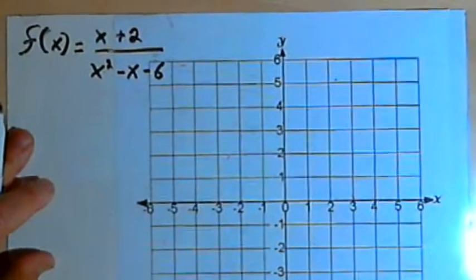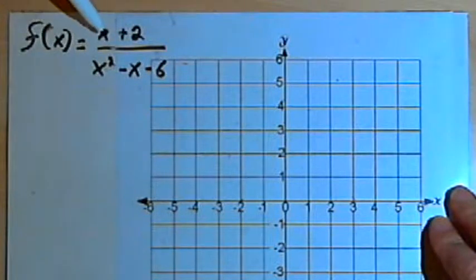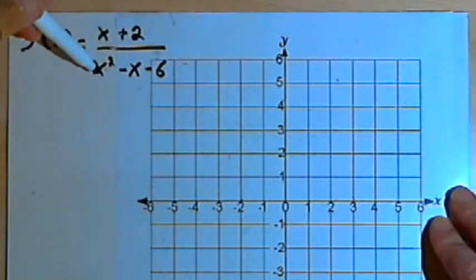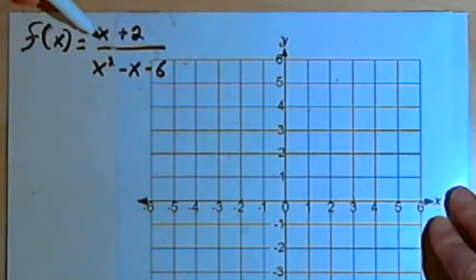So let's say we've got a rational function like this one: f equals x plus 2 over x squared minus x minus 6. And we want to graph this.